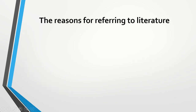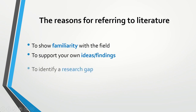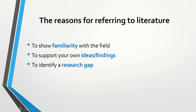There are a number of reasons for referring to literature. We refer to literature to show that we are familiar with the field, to support our own ideas and findings, to identify a research gap — which is especially important when we conduct a study — and to avoid being accused of plagiarism. It is important to acknowledge sources.